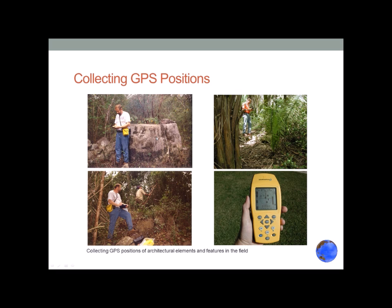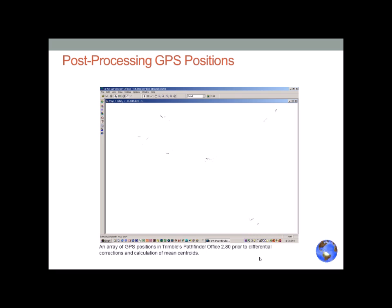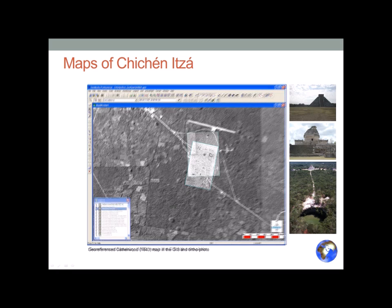Here's collecting GIS positions — this is a serpent head column base in a quarry, with a small data collector taking those positions. The points, when collected, are put into software called Pathfinder Office. We then do what's called differential corrections. What look like windswept sands all represent one point — the software takes all those readings, calculates the centroid, and also applies atmospheric corrections based on known base stations where latitude and longitude are already established.